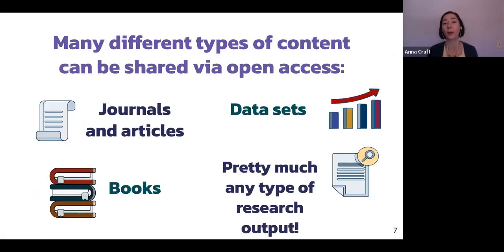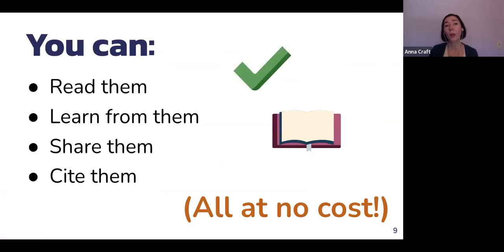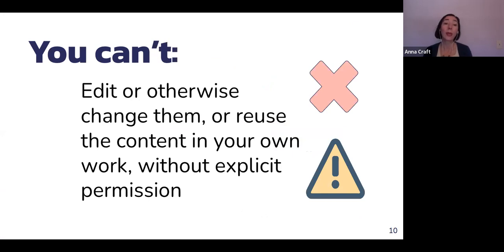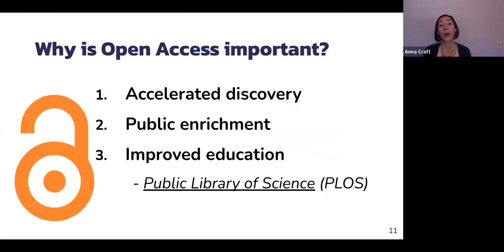Lots of different content can be shared through open access. The types most commonly discussed are journals and journal articles, but you can also share datasets, books — pretty much any type of research output. With these materials you can read, learn from, share, and cite them, all at no cost. However, you can't edit or otherwise change these materials or reuse content in your own work without explicit permission from the copyright holder. Open access is important because it accelerates discovery, enriches the public, and improves education by making materials available to everyone.